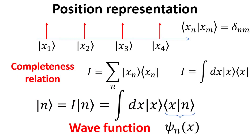Consider basis vector x1 whose value is highly localized at location x1 but 0 elsewhere, and similarly for other locations x2 and so on. These basis vectors are obviously orthonormal since their inner product with one another is 0, except with itself. From linear algebra, which we discussed in a separate video, we have shown the completeness relation, which allows us to write the identity as a sum of outer products.